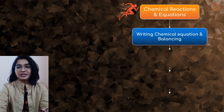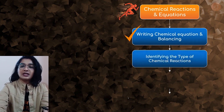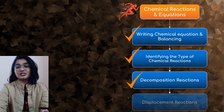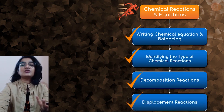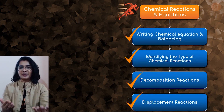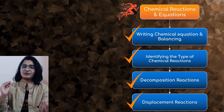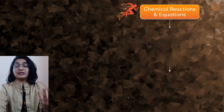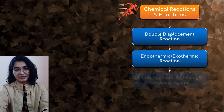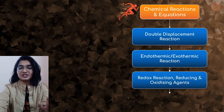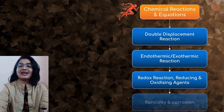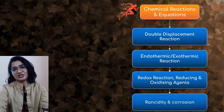Under that, writing chemical equations and balancing it, identifying the type of chemical reactions, decomposition reactions, displacement reactions. We did solve a few — how to balance the chemical equation and a few questions in very less amount of time. What we will be discussing in today's session is double displacement reaction, endothermic and exothermic reactions, redox reactions, reducing and oxidizing agents — very important — and the last one is rancidity and corrosion. Ready?